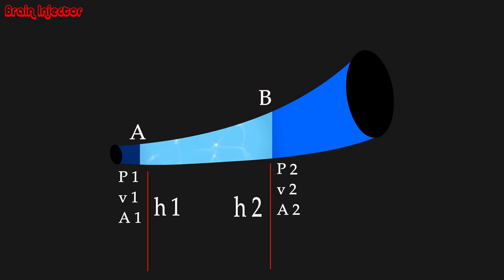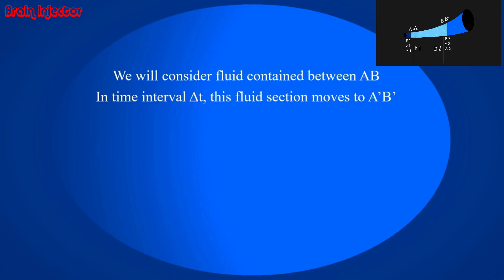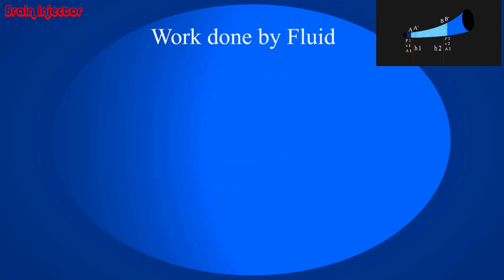Now that fluid part between AB has moved to A dash B dash, which is approximately at the same reference level. Hence, there must be some work done by the forces in moving that fluid part from AB to A dash B dash. First, consider work done by the fluid. It is the sum of the work done by moving that fluid part from A to A dash, A dash to B, and B to B dash.